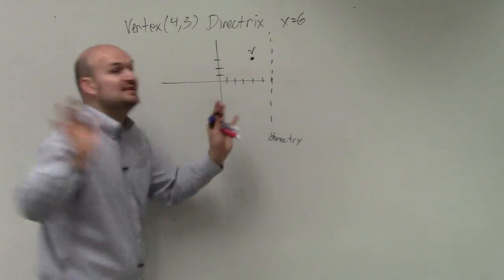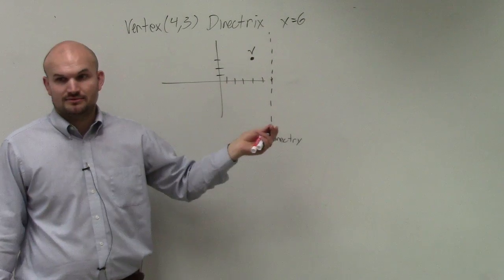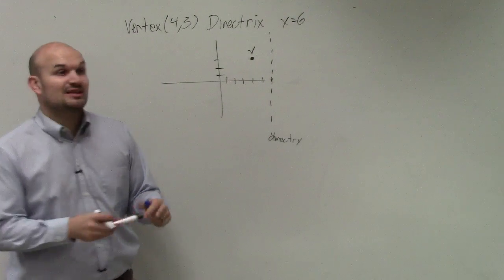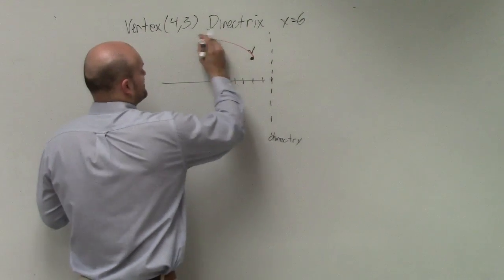Now, just based on this information alone, do I know if the graph opens up, down, left, or right? Yeah. Opens up to the left. It's always away from the directrix, right? So my vertex opens up somewhere like this.